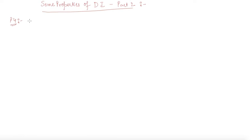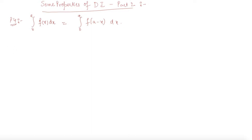In the last lecture, we discussed P0 to P3. Now it is time to discuss P4, which states that the integral from 0 to a of f(x) dx equals the integral from 0 to a of f(a minus x) dx. This is just an extension, or you can say a particular case of P3, because here B becomes a and a was 0. I am not giving the proof of this because it is just the particular case of P3.